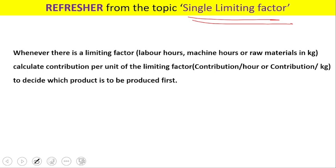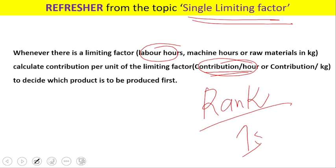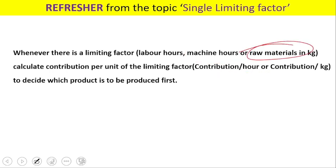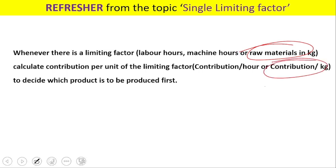In the case of a single limiting factor, say labor hours is limited, you have to calculate the contribution per labor hour and then rank the products. The product with the first rank should be produced first — that is how you increase profitability. If machine hours is limited, calculate contribution per machine hour. If raw materials in kg are limited, calculate contribution per kg, then rank the products to decide which to produce first.